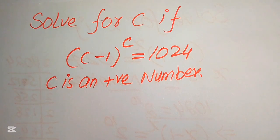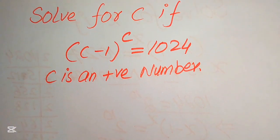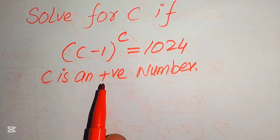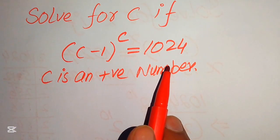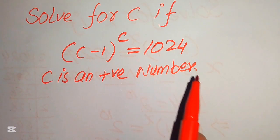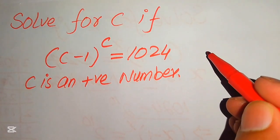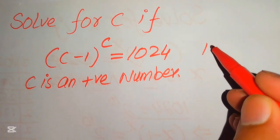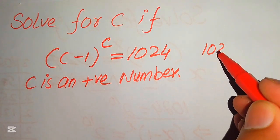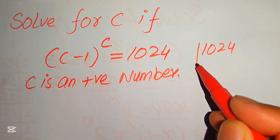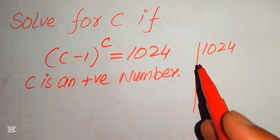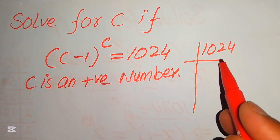I hope you like this method, but if you have any other method in your mind, please don't hesitate to write it into the comment section. Now, first we need to find the prime factors of 1024. For this we just use a technique to find the prime factors of 1024.